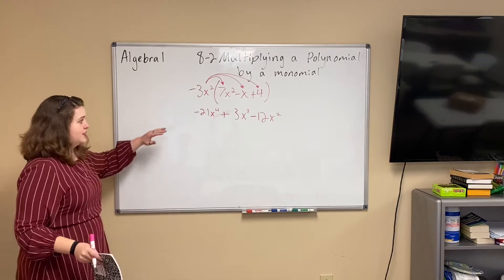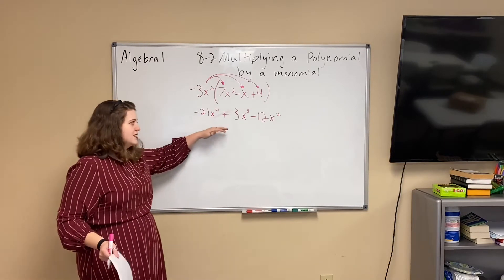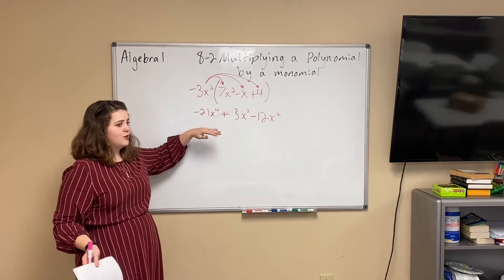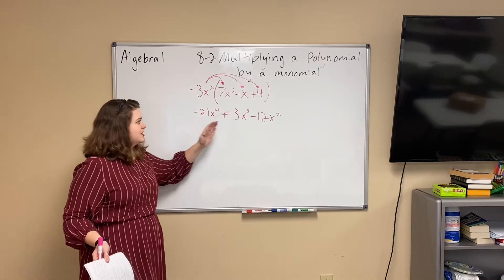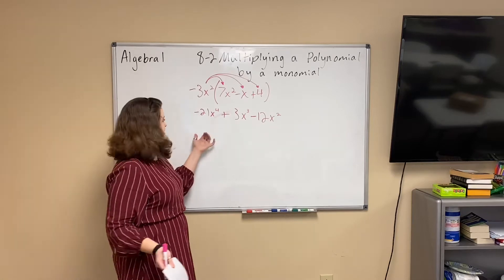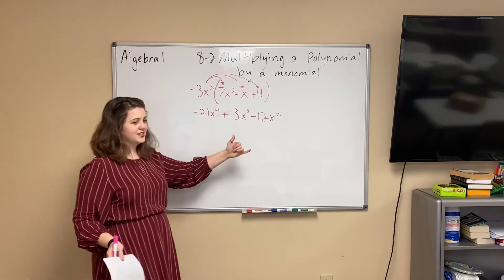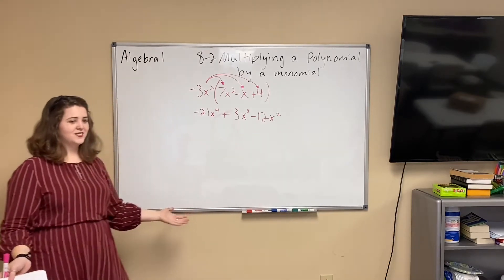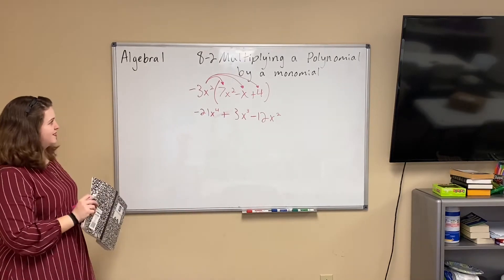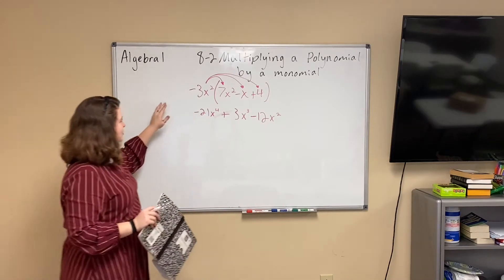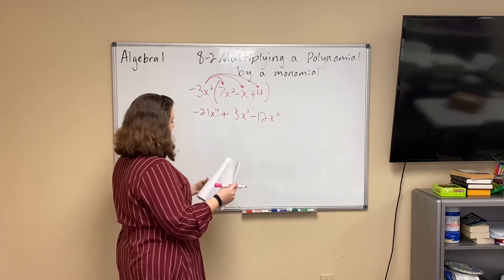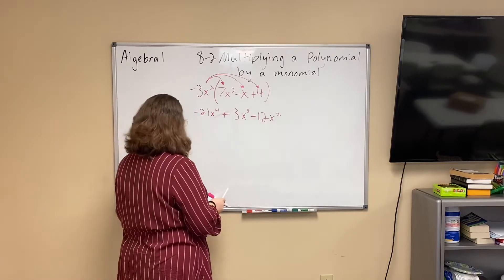Negative 3x squared times 4 is going to be negative 12x squared. Now we're going to check and see — is this in standard form? Is it from greatest to least? And it is, so we're done. We've multiplied our polynomial by a monomial.